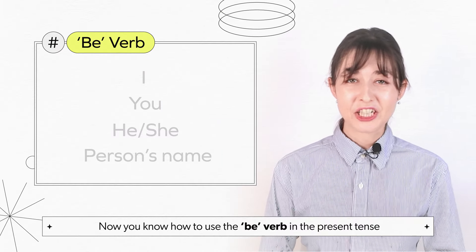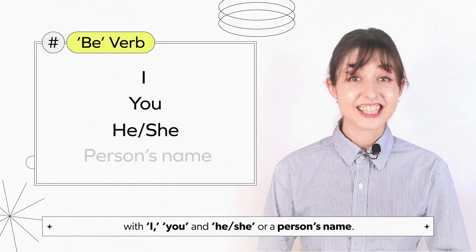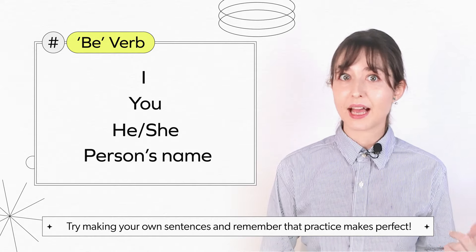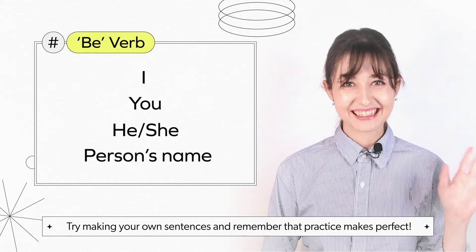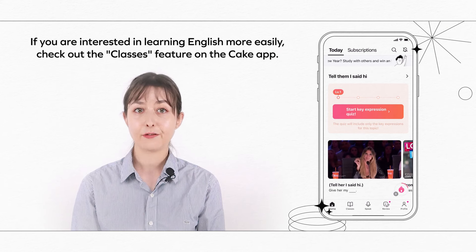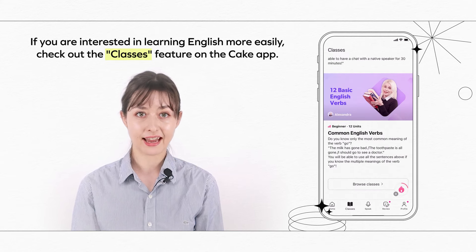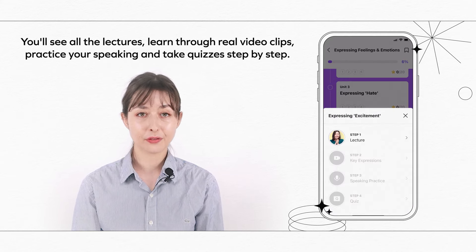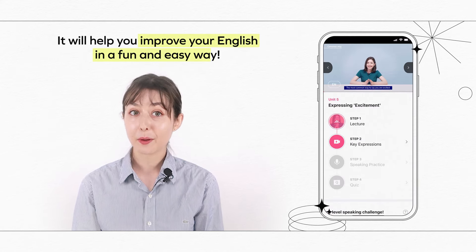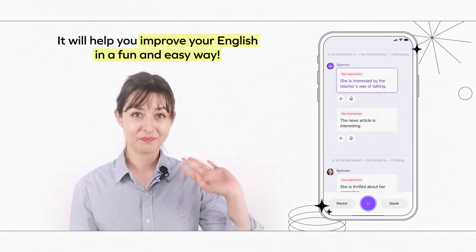Now you know how to use the be verb in the present tense with I, you, and he, she, or a person's name. Try making your own sentences, and remember that practice makes perfect. Bye! Download Cake now and improve your English. If you are interested in learning English more easily, check out the classes feature on the Cake app. You'll see all the lectures, learn through real video clips, practice your speaking, and take quizzes step-by-step. It will help you improve your English in a fun and easy way. And I'll see you next time. Bye.